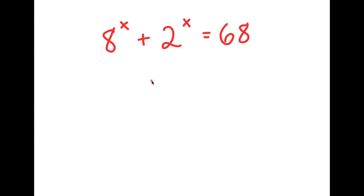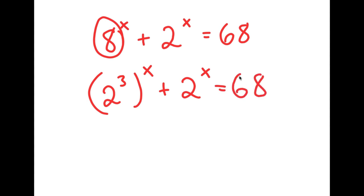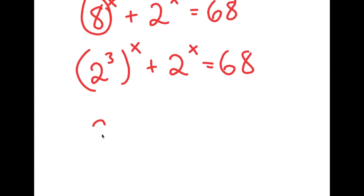In this problem, I have 8 to the power of x plus 2 to the power of x is equal to 68. I'm going to first start by rewriting 8 as 2 to the power of 3, so I get 2 to the power of 3 to the power of x plus 2 to the power of x is equal to 68. Now I'm going to rewrite 2 to the power of 3 to the power of x as 2 to the power of x to the power of 3.